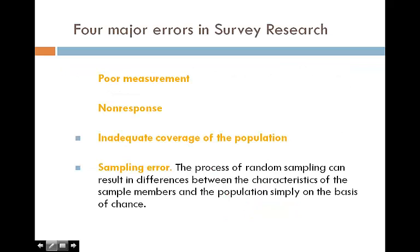There are four major errors in survey research. Number one is poor measurement. In order to avoid poor measurement, one of the critical steps we should do is pre-testing. Every questionnaire should be done with pre-testing. Non-response rate is another issue, so we need to use what we call the total design method, or tailored design method, to make sure that our respondents can answer our questions.